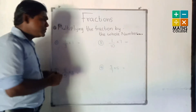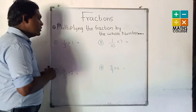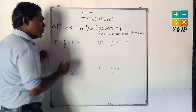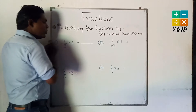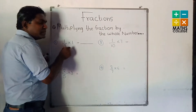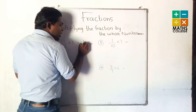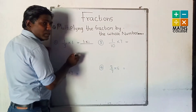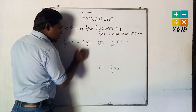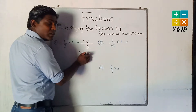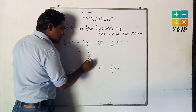First one, you can see here a fraction and whole number is 1. Look at the board very carefully. You multiply the numerators: 1 multiplied by 1. The denominator is 3. 1 multiplied by 1 is 1, so the answer is 1 upon 3.